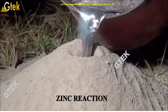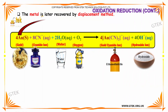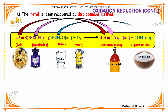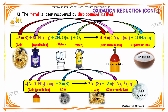The metal is later recovered by a displacement method. Gold with cyanide and water plus oxygen will provide gold cyanide ion with a hydroxide ion. The gold cyanide ion then reacts with zinc to form gold and zinc cyanide ion. In this reaction, zinc acts as a reducing agent.